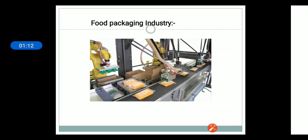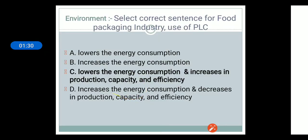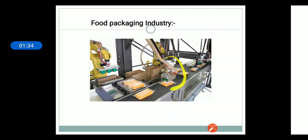This is one example of PLC in the food packaging industry. To pack the food product, this type of assembly can be used. Here, the first arm is used to wrap the food product in plastic. Then the second arm is used to stick that plastic. Then, this conveyor belt is used to rotate the food item from one arm to another arm. And the third arm is used to count the number of food packets packed. All of this process is controlled and monitored with the help of PLC.